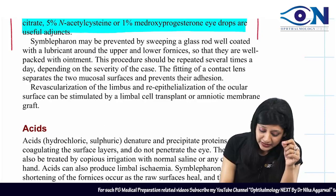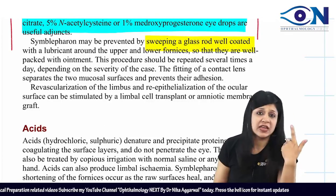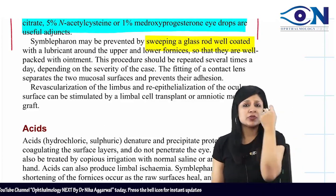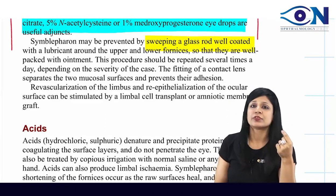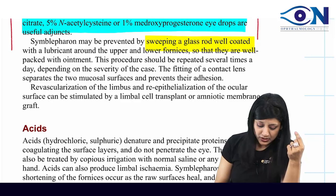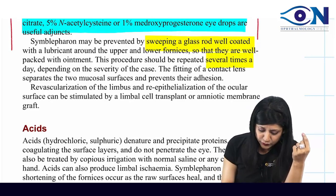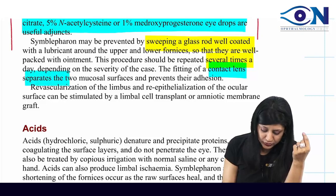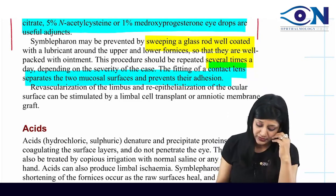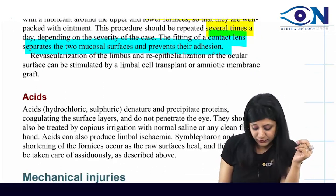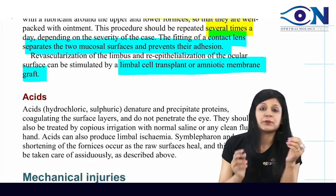To prevent symblephron, sweep a glass rod above and below in the fornices so that raw areas do not adhere — this should be repeated several times. A contact lens can also be fitted so that the two mucosal surfaces are not in contact. Finally, limbal cell transplant or amniotic membrane graft may be performed.